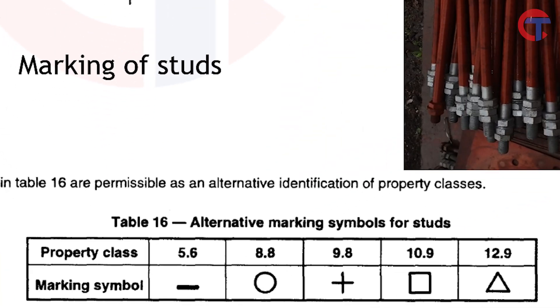There are some alternative ways to represent the grade of a bolt, shown in table number 16. It goes: a straight line for 5.6, a circle for 8.9, a plus for 9.8, a square for 10.9, and a triangle for 12.9.